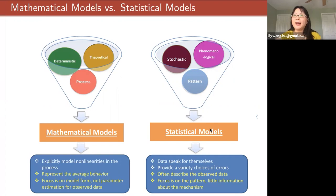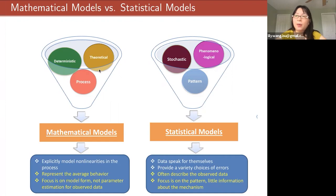I'd like to compare mathematical models and statistical models — this is really a tale of two fields. As you can see, the dynamics of the SIR model can inform us of the deterministic skeleton on which the behavior of the corresponding stochastic systems is built. But it only represents the average behavior, and the focus of mathematical models is usually on the model form itself — they are not interested in parameter estimation for observed data.